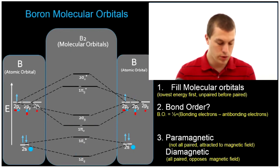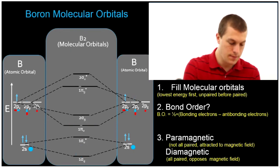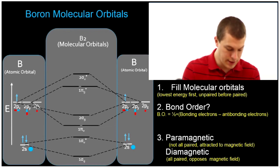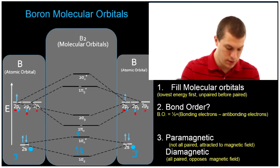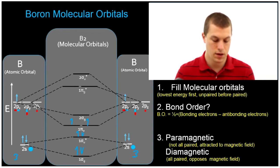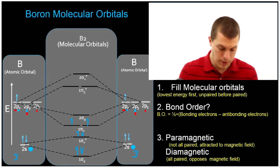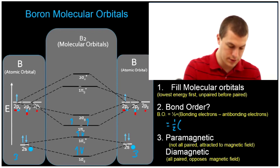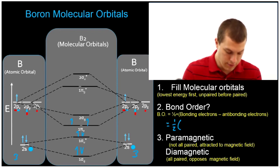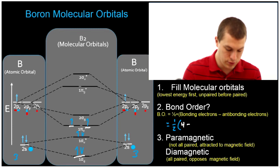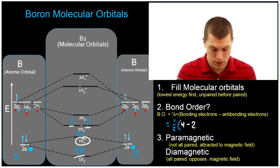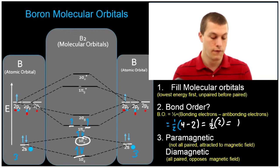One last molecular orbital diagram — now we're looking at boron. Here you'll notice we have three electrons on each side, and we're going to fill in our electrons: one, two, three, four, five, six. Now I can calculate my bond order: one half times the number of bonding electrons. I have a bonding electron there, there, and here — a total of four, minus those two electrons which are in my antibonding sigma orbital. That's going to give me one half times two, or one. So the bond order for B2 is one.